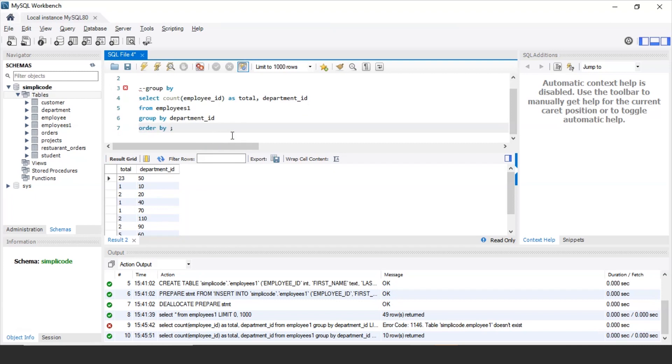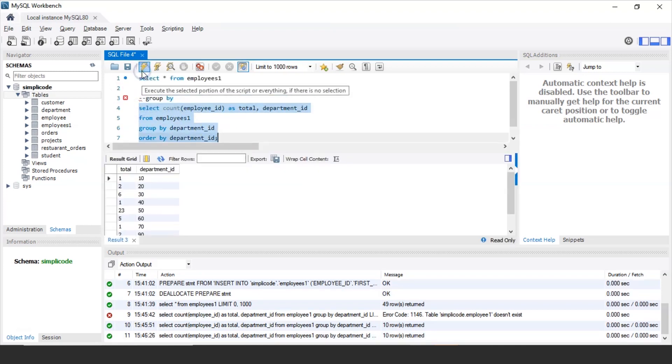Now in order to display in a systematic and a proper way, this is where we use the ORDER BY statement. So we can sort the department ID values in the ascending or descending manner as per requirement. So I want to display in ascending order so ORDER BY department ID.